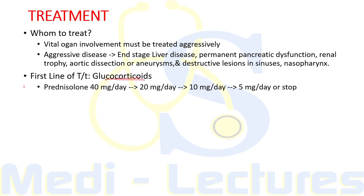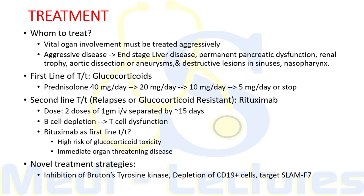The first line of treatment, as in most autoimmune conditions, is glucocorticoids. Typically prednisolone is given with a starting dose of 40 mg/day, then tapering to 20 mg, 10 mg, followed by 5 mg per day, or stopping over 2 to 3 months.